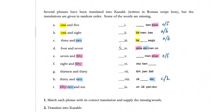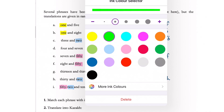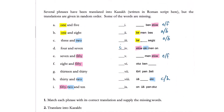Now looking at number six and number nine, highlighted in green, it seems like we have quite a few options. But looking closely at number nine, it actually has four words, and the only other options that have four words that we've matched already are 52 and 10. So the four words are likely to be 13 and 30.